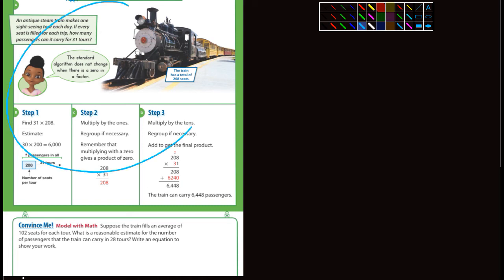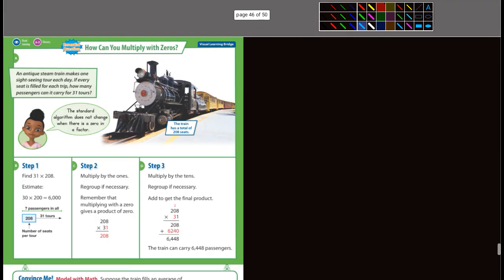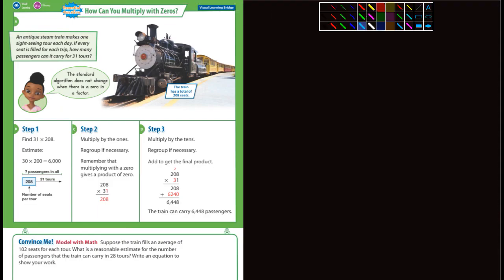So this is an example here. It says an antique steam train makes one sightseeing tour each day. If every seat is filled for each trip, how many passengers can it carry? They show you the steps there. They did find 31 times 208, and in steps 2 and 3 they show you how they did that. I don't need to go over that. You guys know how to do this stuff by now.